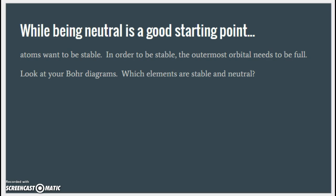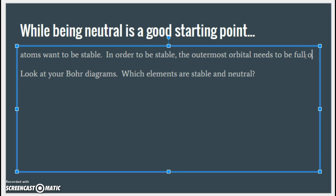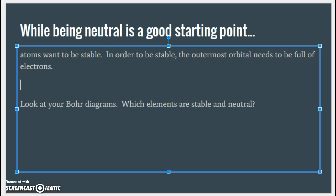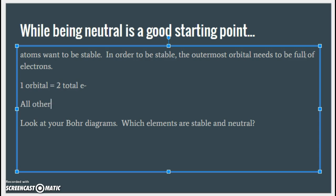While being neutral is a good starting point, atoms want to be stable. In order to be stable, the outermost orbital needs to be full of electrons. The first orbital can hold a maximum of two total electrons, and all other orbitals that we will be drawing can hold a maximum of eight electrons.